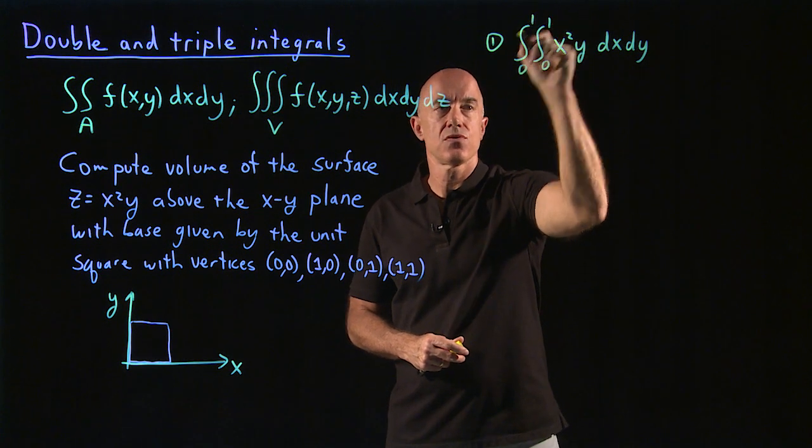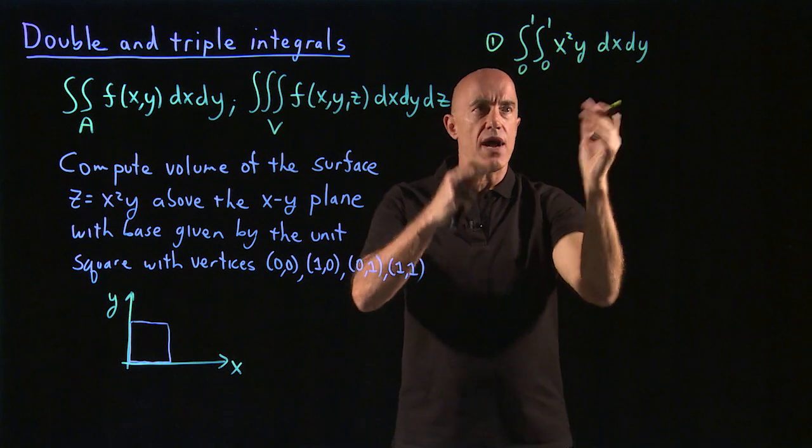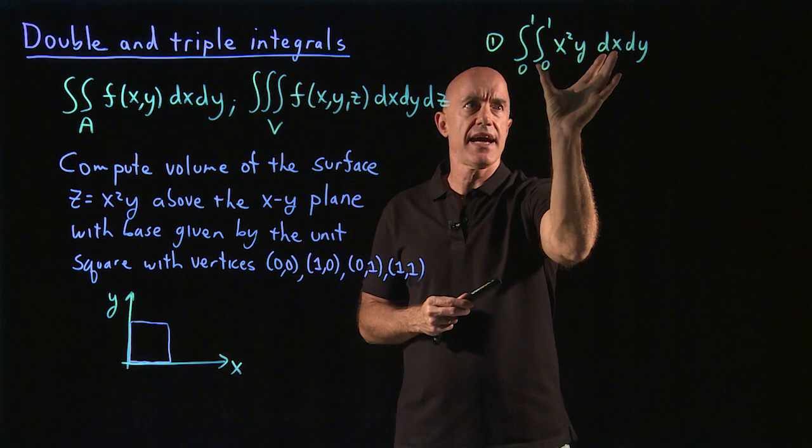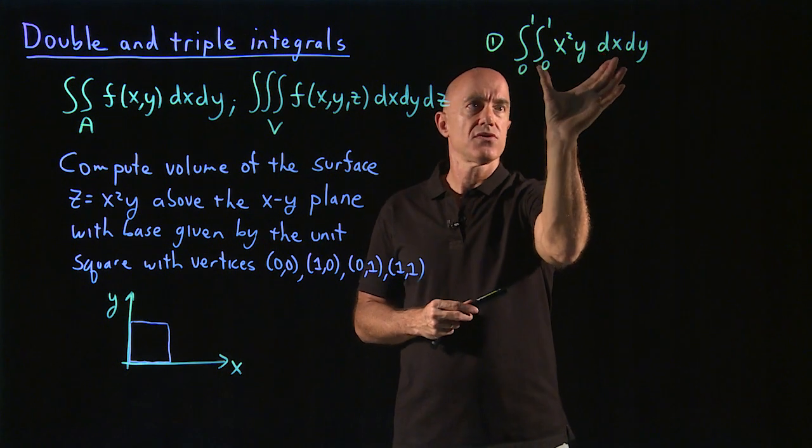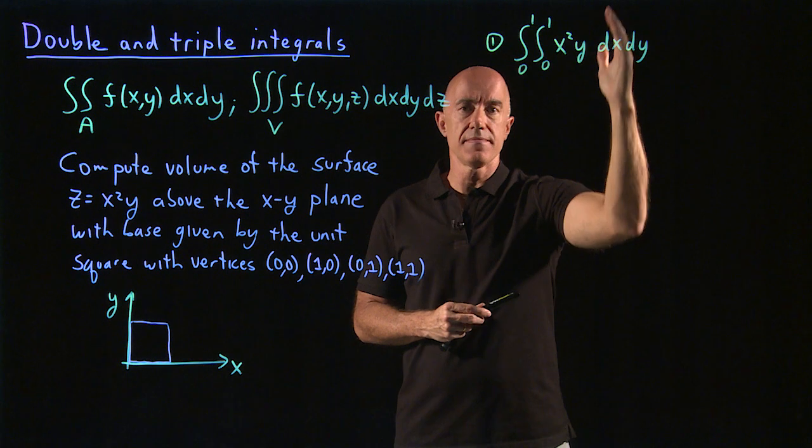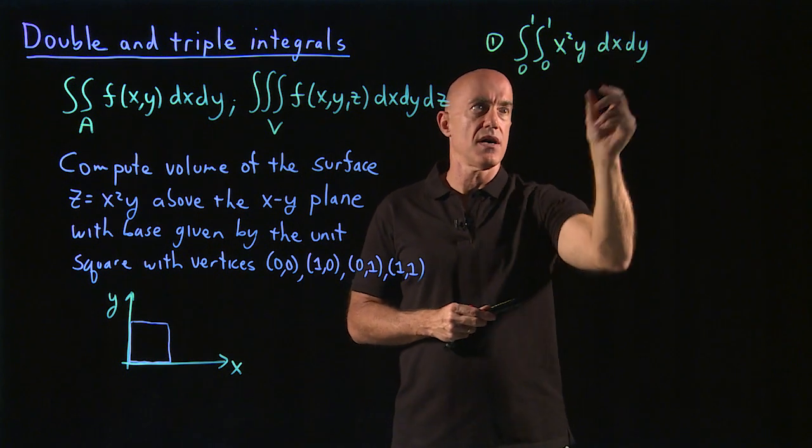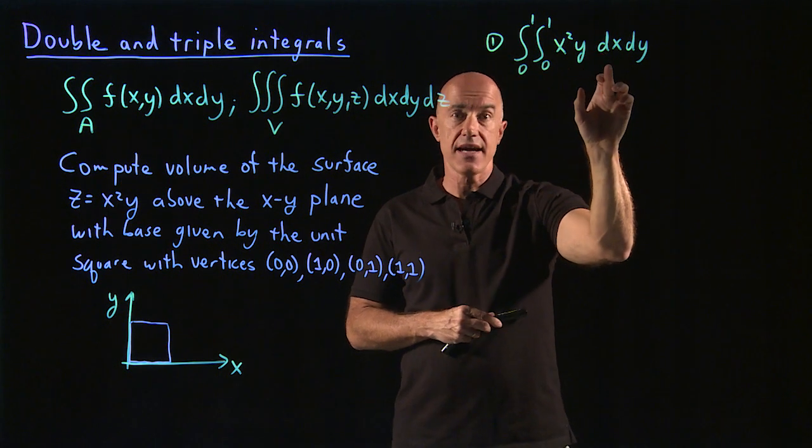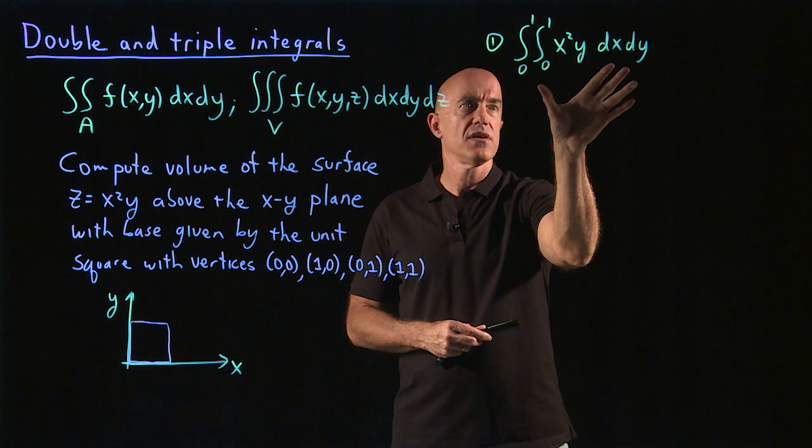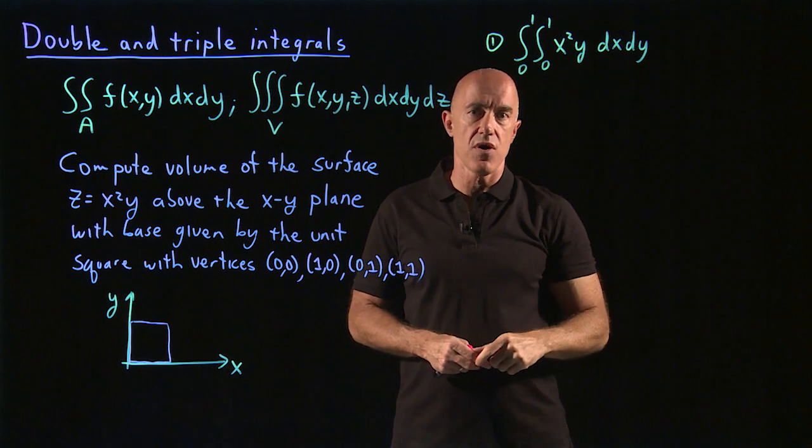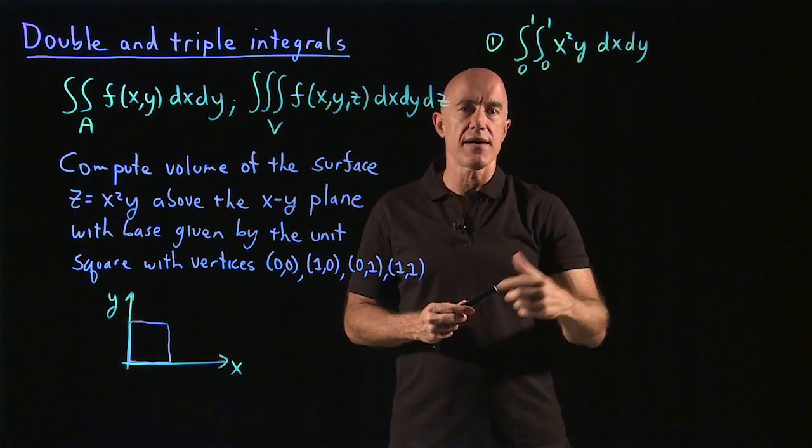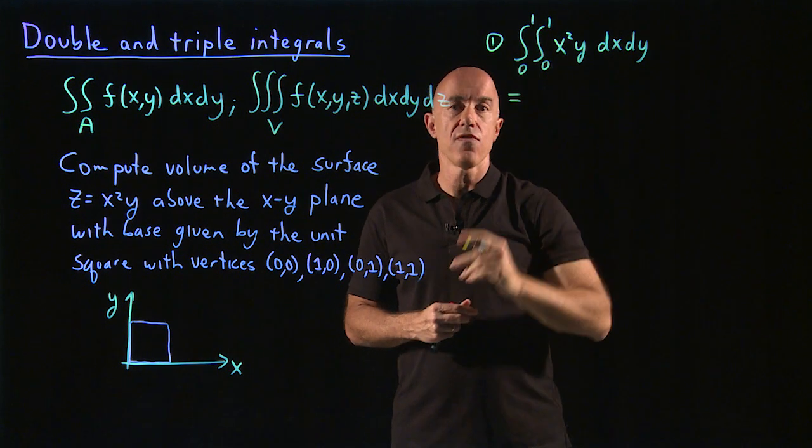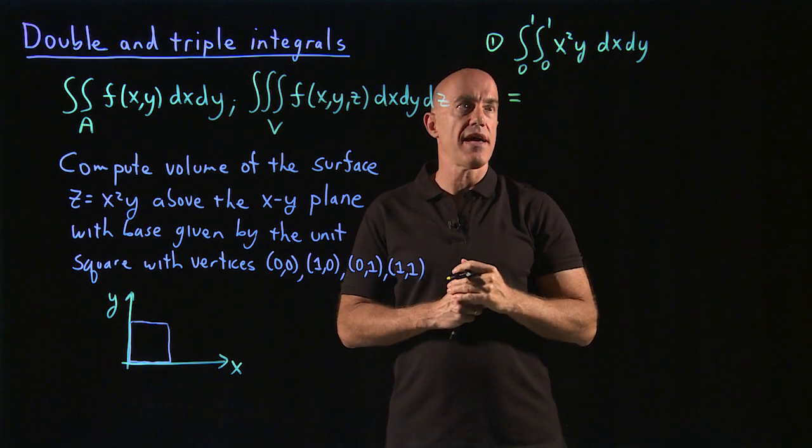So when you write this integral, the meaning is you do the first integral dx first. So the dx, the first infinitesimal element dx means that the first integral corresponds to integrating x dx. And the second integral corresponds to integrating dy. And in a case like this, you just do them sequentially. So first you integrate over x, keeping y fixed.